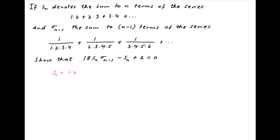Sn is the sum to n terms of the first series, which is equal to 1×2 + 2×3 + and so on. The general term here is k(k+1), and so Sn can be written as the summation of k(k+1) where k varies from 1 to n. This is equal to summation of k² + k.